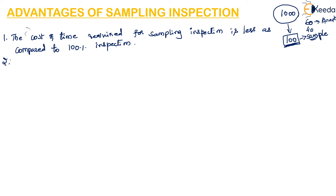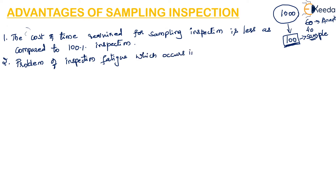The second advantage is that the problem of inspection fatigue, which occurs in hundred percent inspection, is eliminated. The third advantage is that a smaller inspection staff is necessary — we need not employ many people for inspection, as only a few people are enough for inspecting the components.